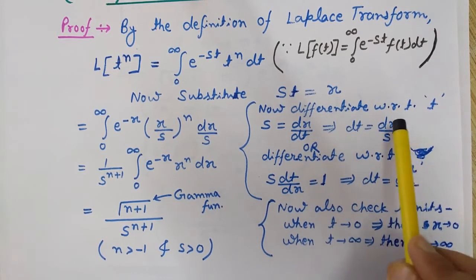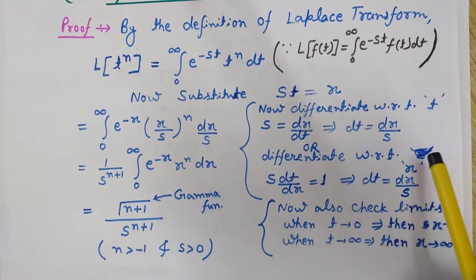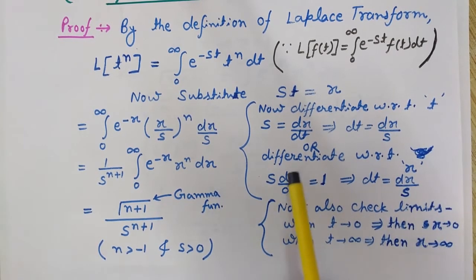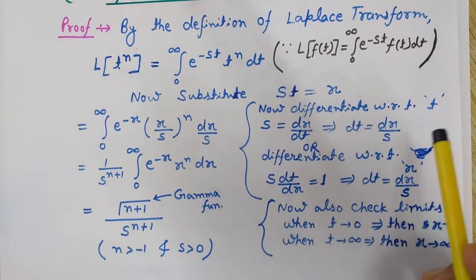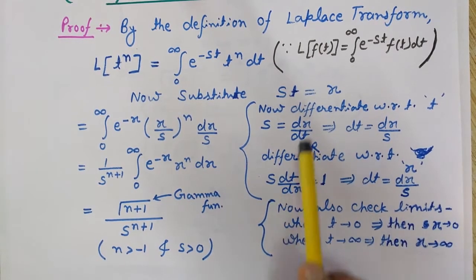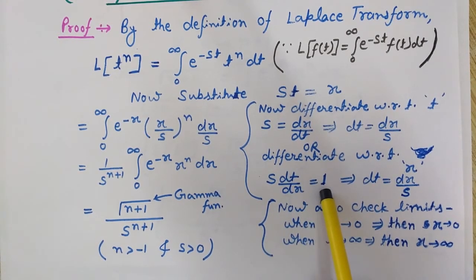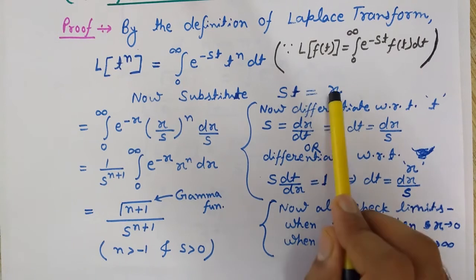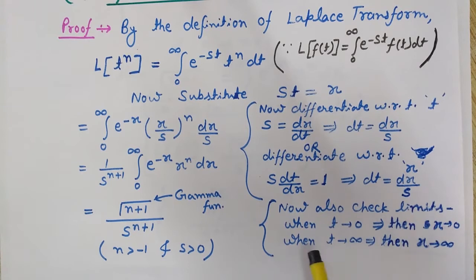We can also differentiate with respect to x and get the same result. Differentiating x with respect to x gives 1, so dt/dx equals 1/s, and therefore dt equals dx/s.